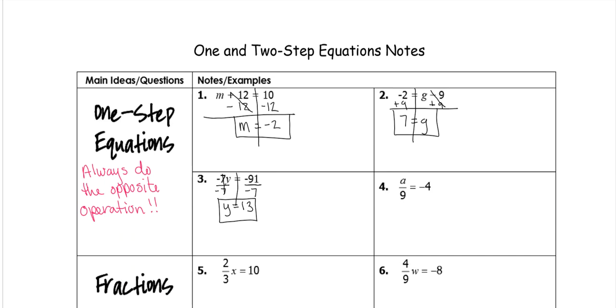This one is dividing by 9. Yes, it's a fraction, but in high school, fractions are just division. So we're dividing by 9. The opposite would be to multiply both sides by 9.